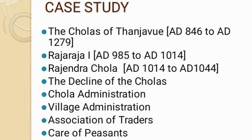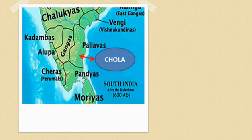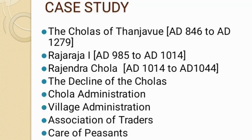The Chola empire remained intact up to AD 1122. Thereafter, there was continuous fighting with the Chalukyas. The Chalukya ruler Vikramaditya captured Vengi. Then the Chola dynasty became completely weak. Taking advantage of this, the Pandyas in the south established the Vijayanagara kingdom in the 14th century.